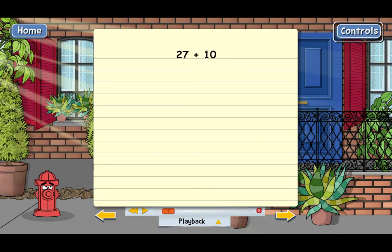One way to get the answer here is to start at 27 and then count by ones. You could go 28, 29, 30, 31, 32, and you could just go all the way up until you got to 10 more than 27. That would work, but it would take a while.